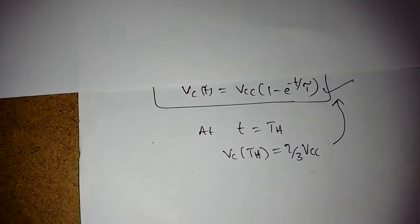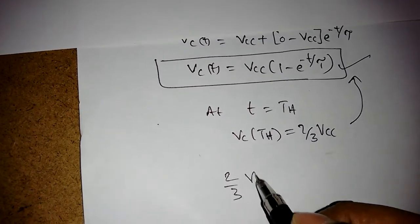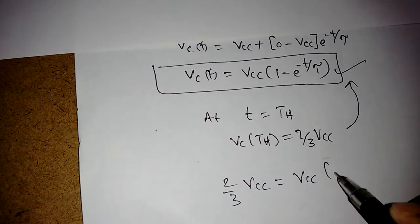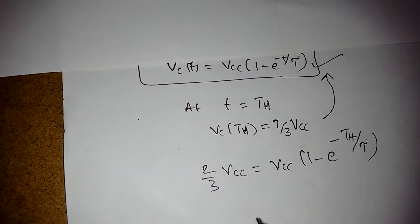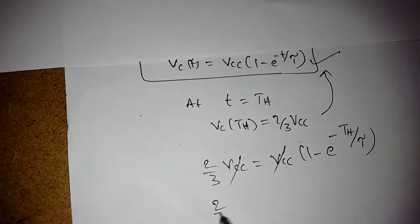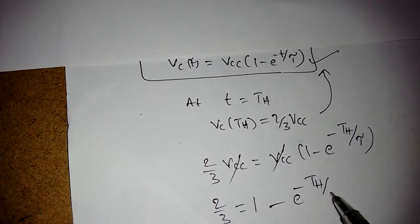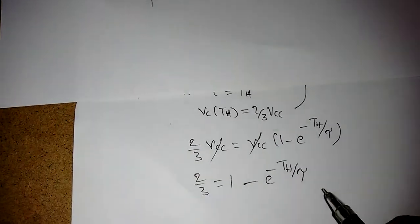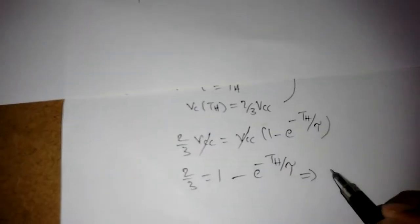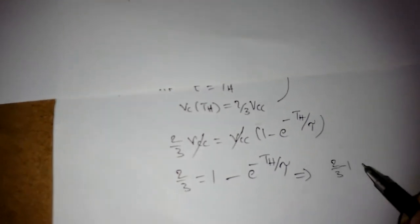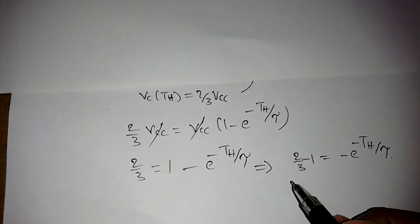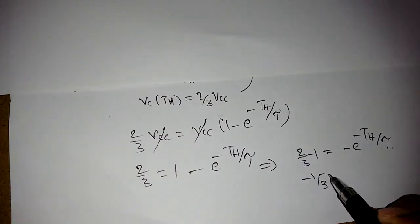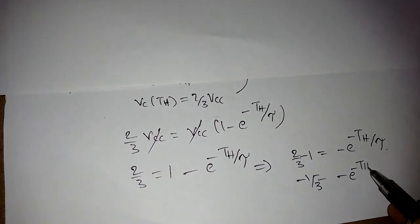Substituting into the expression: (2/3)·VCC = VCC · (1 - e^(-Th/τ)). VCC cancels on both sides, giving: 2/3 = 1 - e^(-Th/τ). Rearranging: 2/3 - 1 = -e^(-Th/τ), so -1/3 = -e^(-Th/τ).